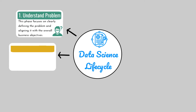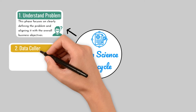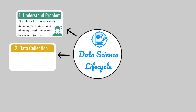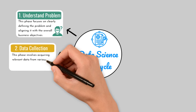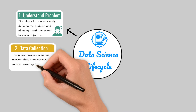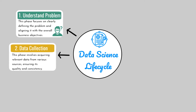Phase 2: Data Collection and Exploration. Once the problem is defined, the hunt for data begins. This phase involves acquiring relevant data from various sources, ensuring its quality and consistency. Data exploration involves analyzing the data to understand its characteristics, identifying patterns, and revealing potential challenges.